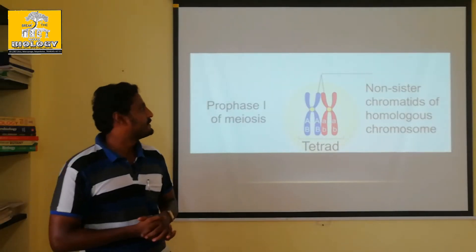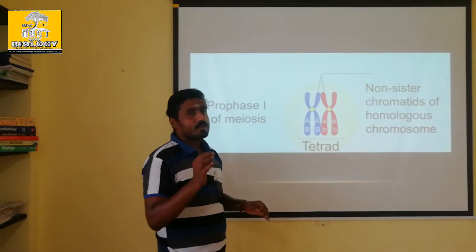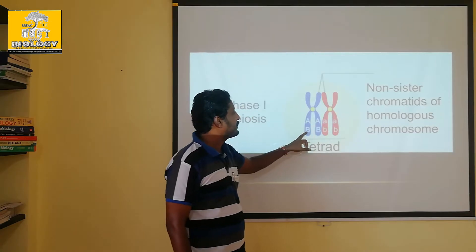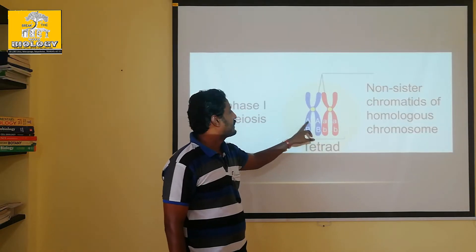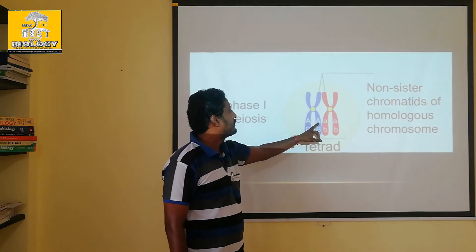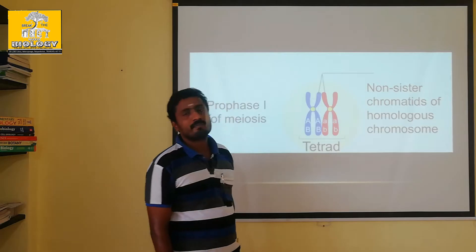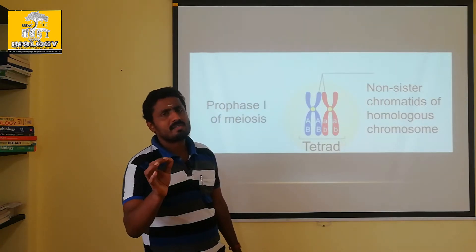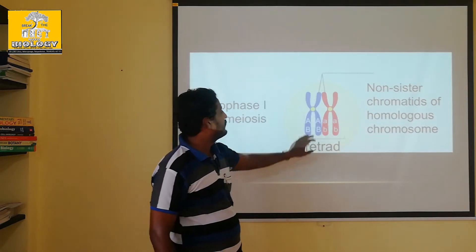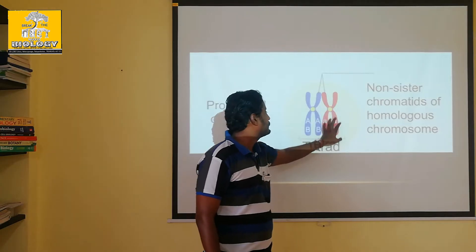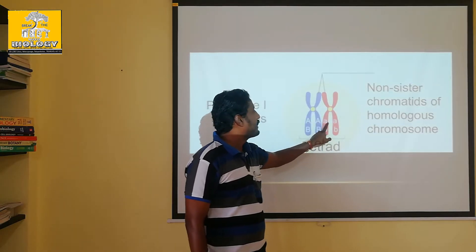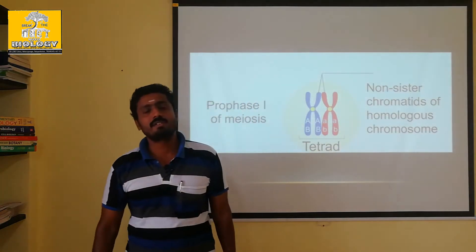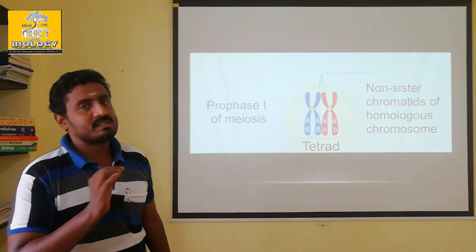So, chromosome structure. This is the parent character: Capital A, Capital A, Capital B, Capital B — that is the parent gene. This is the father. This is the mother: Capital A, small a, small b, small b. That's how we see genes.